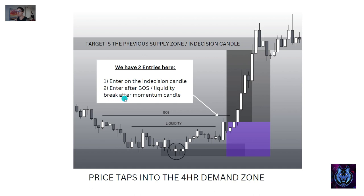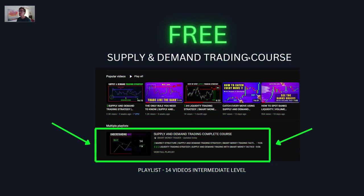These are two very reliable entry types: number one, enter on the indecision candle; number two, enter after a break in structure or liquidity break after momentum candles. Indecision candles and momentum candles go hand in hand — one tells you the market is in balance, the other tells you the institution has just entered. If you enjoyed this video, watch my free supply and demand trading course in my playlist section — 14 videos at intermediate level. The link will be available at the end of this video.